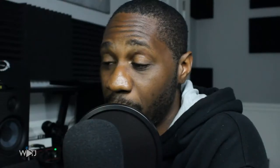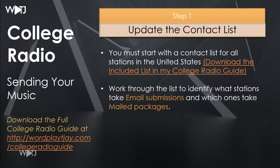Let's jump into the contact list. This contact list means you should have all of the stations ready. By the way, this is for people in the U.S., so don't be put out of shape if I don't have things ready for the UK or other places — I'm just not that knowledgeable about it. You must start with a contact list for all stations in the United States. Download my guide available on my website — it's in the description. Work through that list to identify stations you need to email or mail packages to. I've done my best to update this list, but it may be out of date because turnover in college radio stations is very consistent, so update the contact list as you go through it.